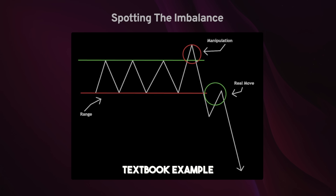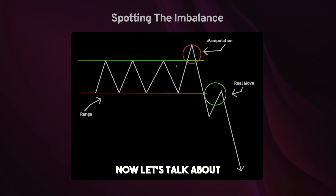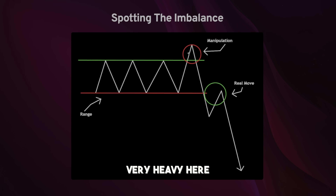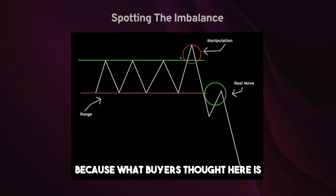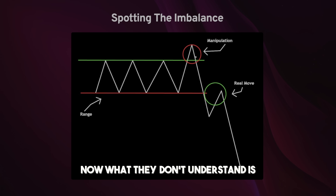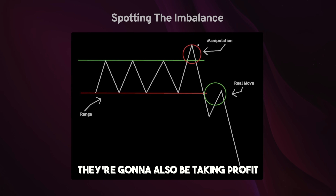This is a very simple textbook example of how to spot imbalance. All we see here is range — buyers and sellers believe the stock is at fair value. Once we broke out of the range, this is manipulation. When we broke out of the range phase, buyers stepped in very heavy to break it to one side, thinking that if we break new high of day more people will enter the stock. What they don't understand is sellers could easily bring the stock right back down — because when breakout traders enter, most people who were already in the stock are also going to be taking profits.